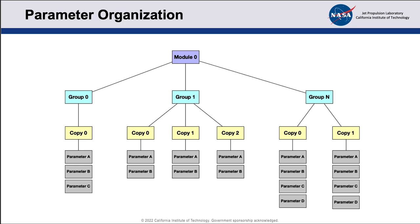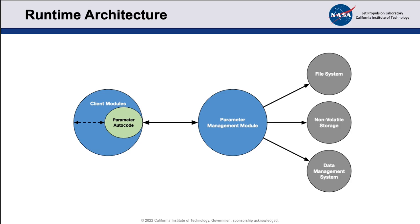Looking at the runtime, there are a couple of big components. We have the parameter management module — a distinct module in our flight software code that handles most of the heavy lifting in terms of managing the parameter system. Then you have the client modules. Inside those client modules there's a little bit of parameter autocode in C that gets compiled into the module's object file. There's also a very small interface that the module itself has to call to initialize and register with the parameter management module during flight software initialization. The parameter management module is really the star of the show — it manages the parameters and interacts with the file system and non-volatile storage data management system.